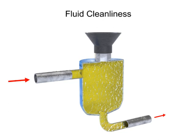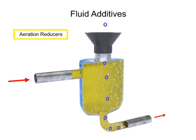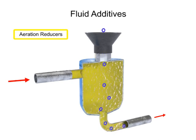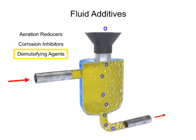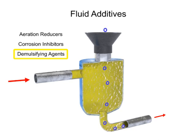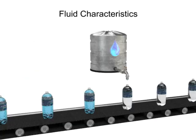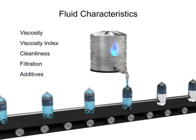Another factor common to hydraulic fluids is the use of additives. Additives can be used to reduce aeration and the production of bubbles as the fluid travels rapidly throughout the system. They can be used to administer corrosion inhibitors within the reservoir, and they can be used as a demulsifying agent, which helps the fluid resist mixing with water. The choice of modern fluids is so wide that when designing a new system, fluid characteristics such as viscosity, viscosity index, cleanliness, filtration, and additives should be considered as early as possible in the design process.